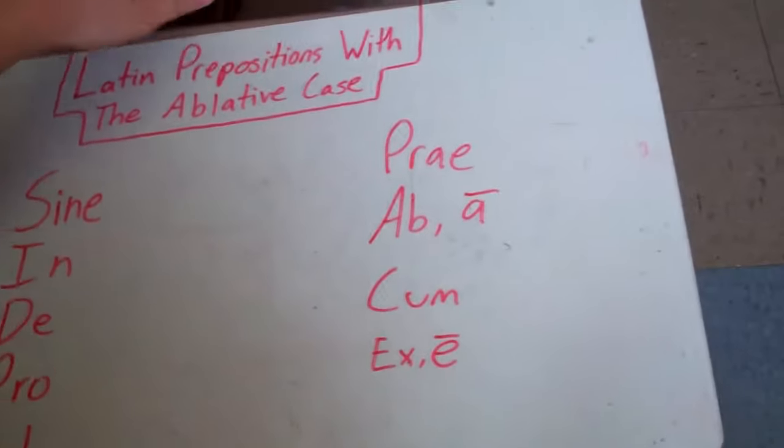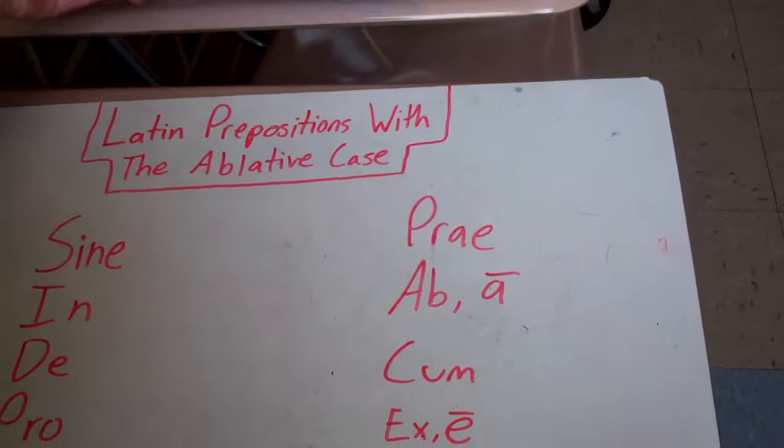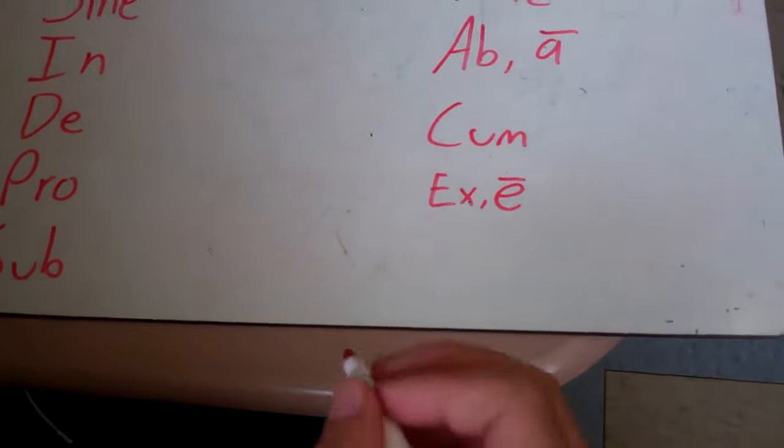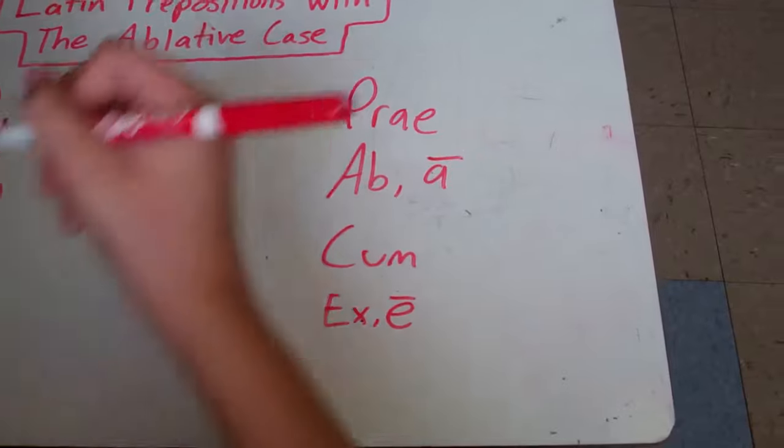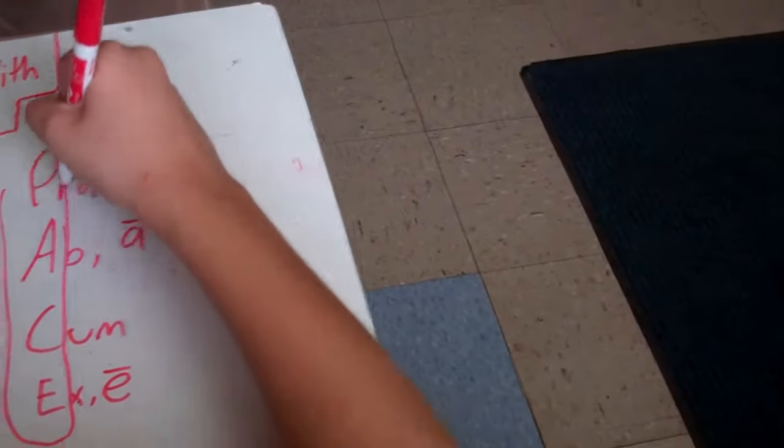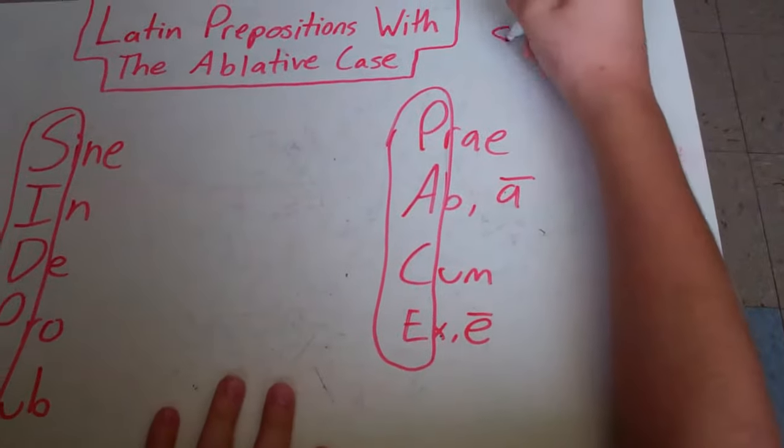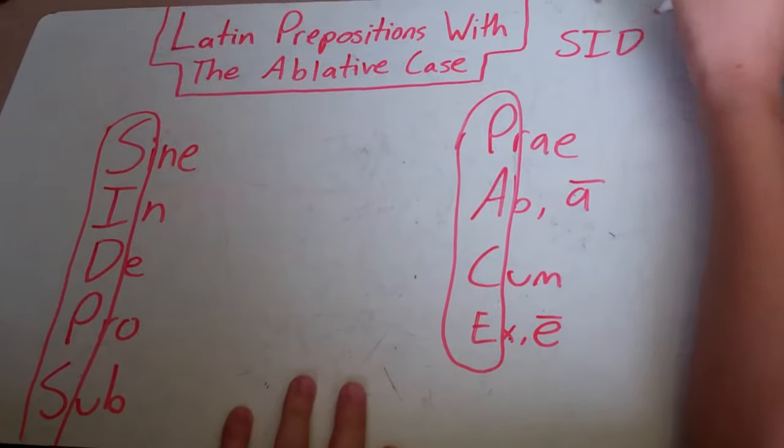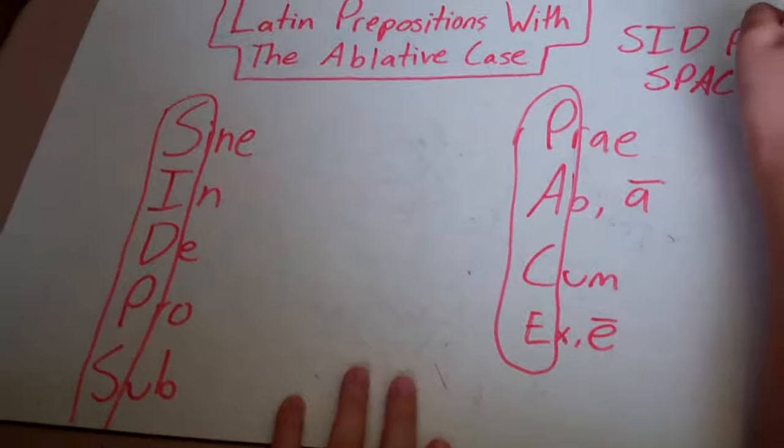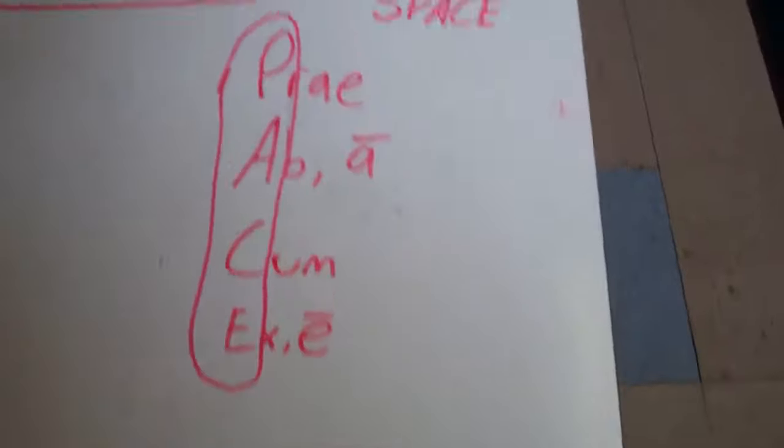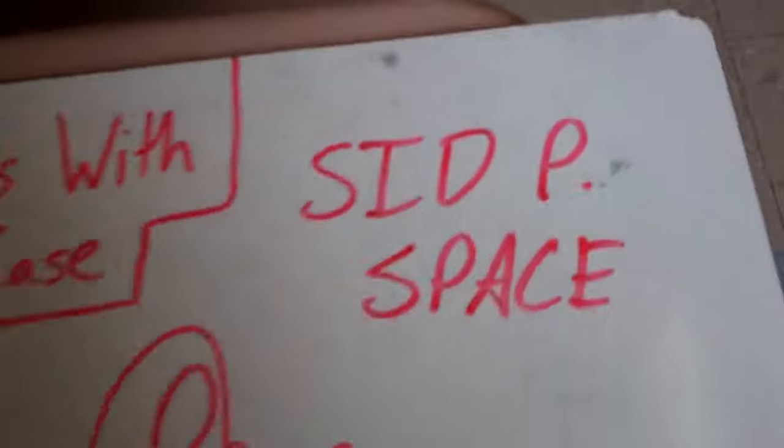A way to remember this is SID P SPACE. You just take the first letter of each one. SID P SPACE.